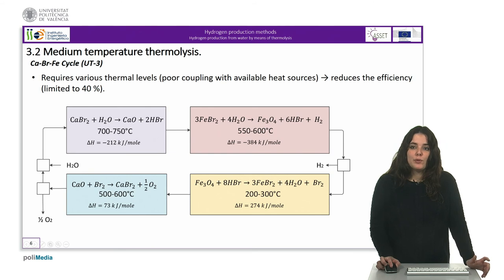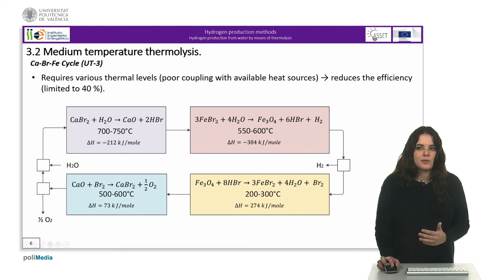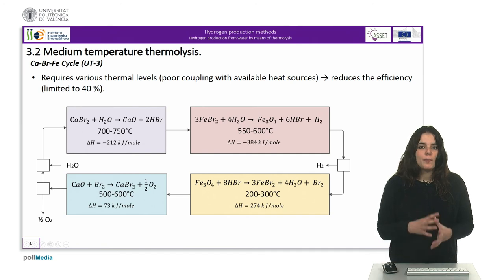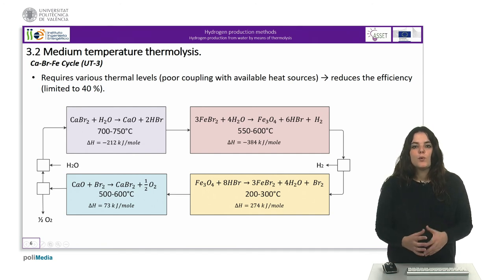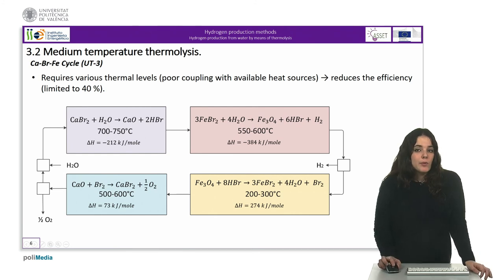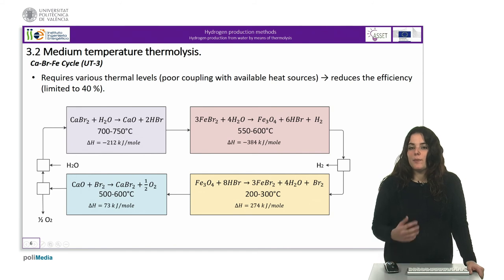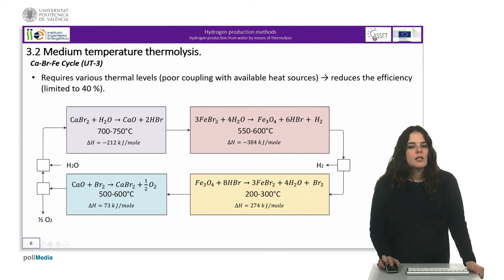The separation of hydrogen from the products is done by membranes that operate below atmospheric pressure, so it is necessary to compress hydrogen and oxygen with the consequent energy consumption. The thermodynamics of this reaction has been shown to be favorable. However, the efficiency of this process is limited to 40% due to the melting point of calcium bromide which is 760°C.